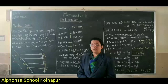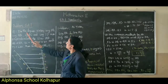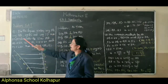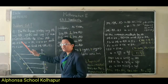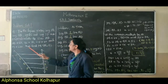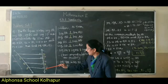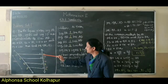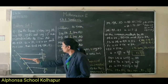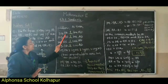Let us solve question number eight from problem set one. The question is: segments PA, QB, RC, and SD are perpendicular to line AD. AB is equal to 60, BC is equal to 70, CD is equal to 80, and PS is equal to 280. Find PQ, QR, and RS. Let us consider a diagram with these given measures. We need to find PQ, QR, and RS.